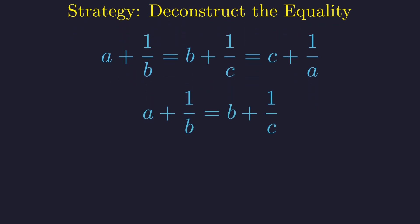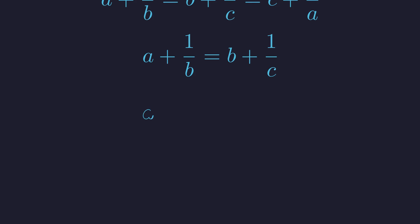This gives us our first equation. We subtract B from both sides and subtract 1 over B from both sides to achieve this. The common denominator is B times C, giving us B minus C in the numerator. Let's hold on to this result.